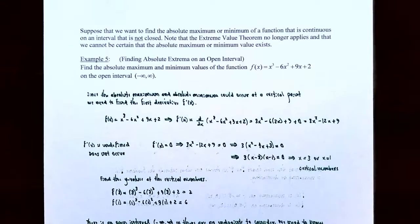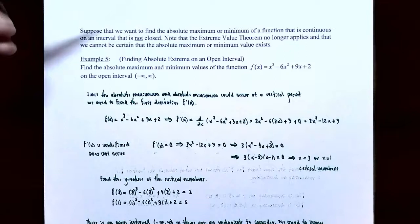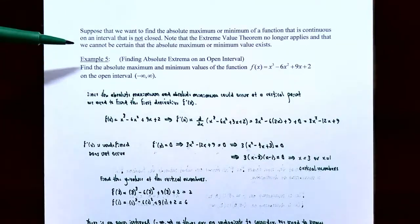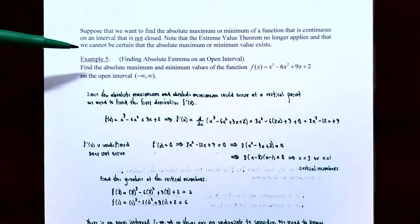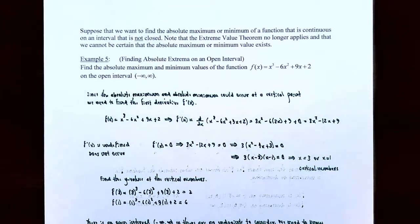In the previous example we found the absolute maximum and minimum on a closed interval. Suppose we want to find the absolute maximum or minimum of a function that is continuous on an interval that is not closed — such as a half-open, half-closed, or open interval. Notice that the extreme value theorem no longer applies, because you cannot guarantee an absolute maximum or minimum if the interval is not closed. So maybe the absolute maximum or minimum does not exist, or possibly both don't exist. Let's look at example 5: finding the absolute extrema on an open interval.